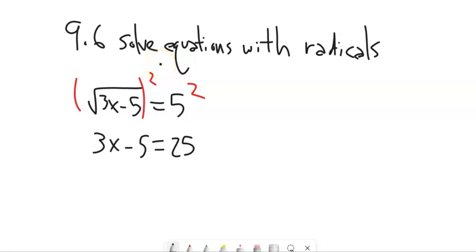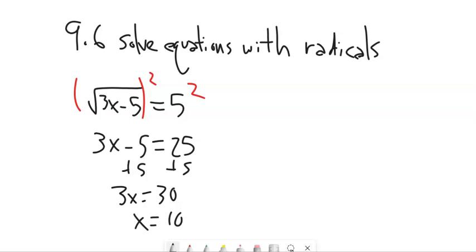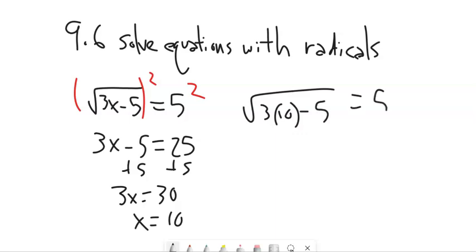And I'm just going to solve this equation like usual. Add 5 to both sides, so 3x equals 30. Divide by 3. x is 10. I'm going to plug it in and make sure that works. So if x is 10, this evaluates to 5. 30 minus 5 is 25. Square root of 25 is 5. Yeah, it checks out.